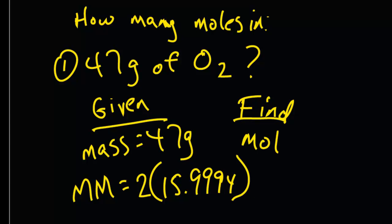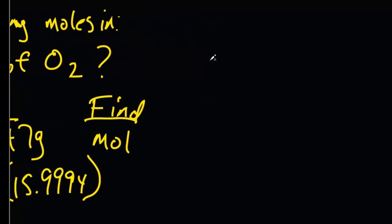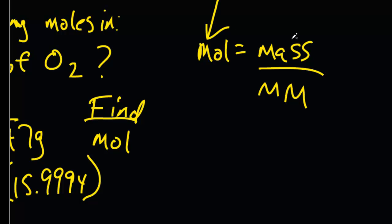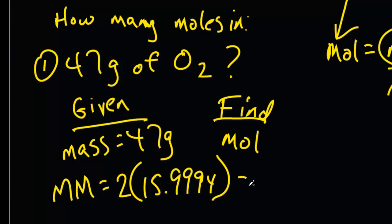How did I know that we were going to need molar mass? Well, I remembered our formula to convert grams into moles. Mole equals mass over molar mass. So if we want to find this and we're given this, then of course the one that's left out is molar mass. We're going to have to calculate that. And that equals 2 times 15.9994, 31.9988.